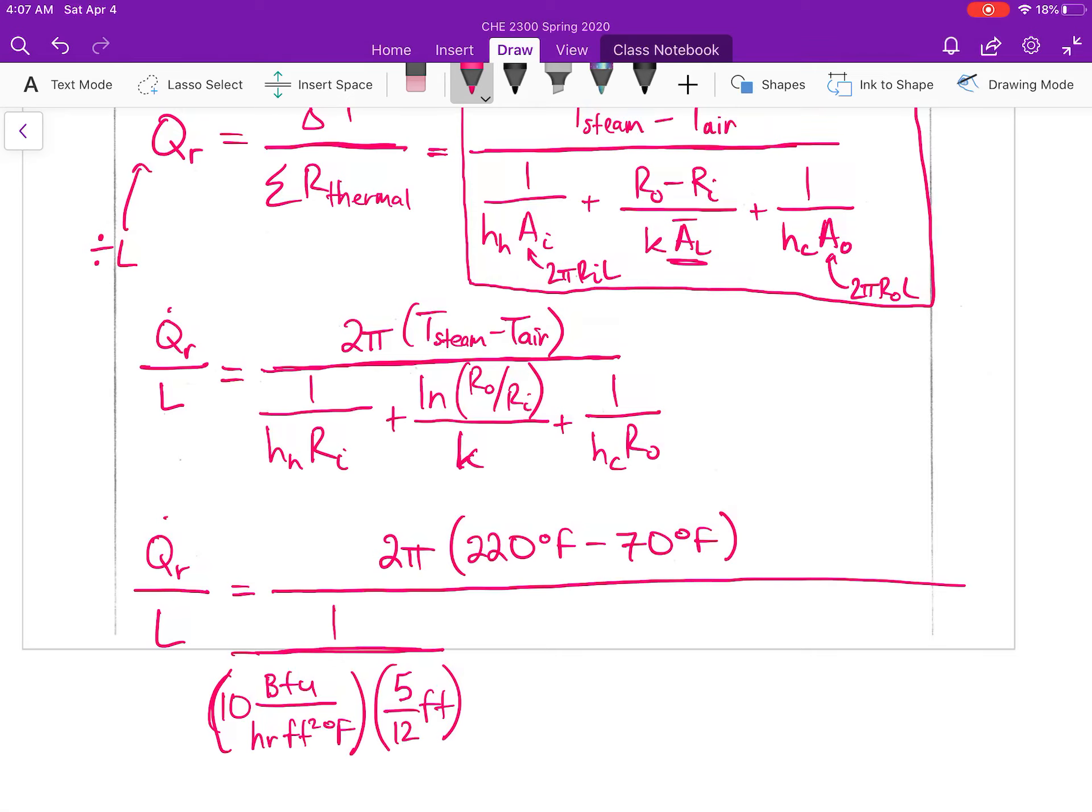Confused myself there for a second. Plus the natural log of the two radii, divided by the thermal conductivity of the steel, 24.8 BTUs per foot hour degrees Fahrenheit.